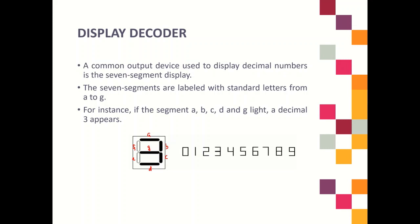The function of the Display Decoder is to display the decimal value. We know that the decoder is used to convert from binary to decimal. We need a device that can display the value — this device is used to display the decimal number. Next, we will look at how we can derive the truth table for this 7-segment display.